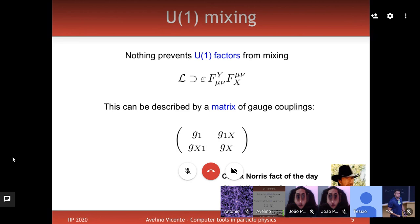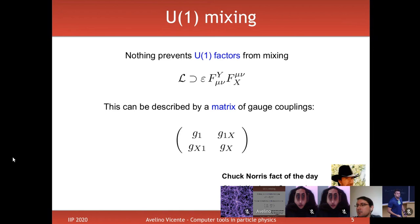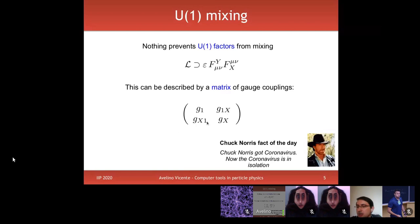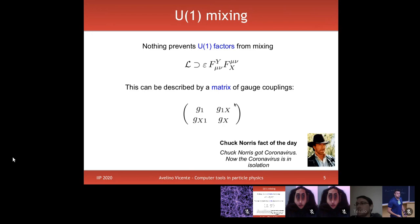G1 and GX are the gauge couplings that appear directly in the Lagrangian. G1X is also in the Lagrangian — it is a different parametrization of the same physics as ε. You can make a gauge transformation to rewrite εFF in a way that identifies off-diagonal gauge couplings in the covariant derivatives. This is the way it is done in SARAH. The exact analytical relation between ε and the off-diagonal couplings is not critical here since we will set them to zero anyway.